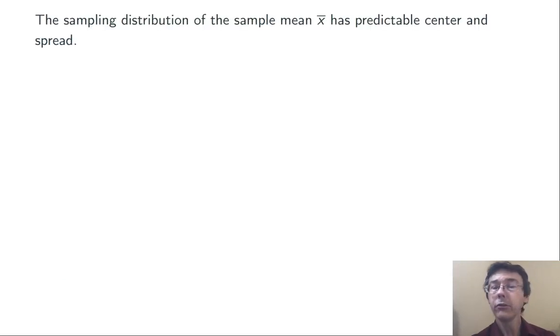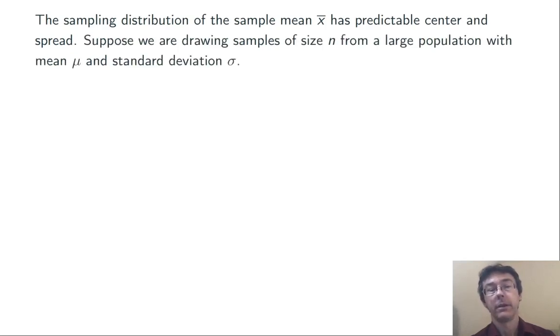Now, the sampling distribution of the sample mean, x bar, has a very predictable center and spread, and this is going to make a lot of statistical inference possible. Suppose we're drawing samples of size n from a large population with mean mu and standard deviation sigma. Then, the mean of the sample mean is going to be mu.